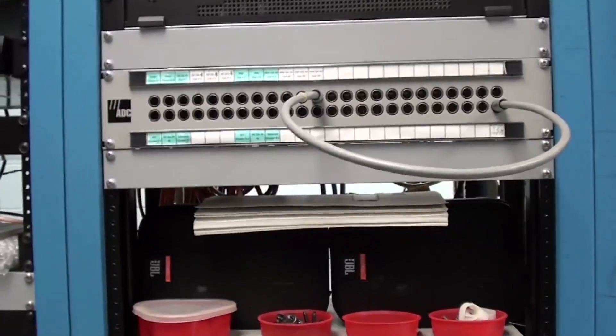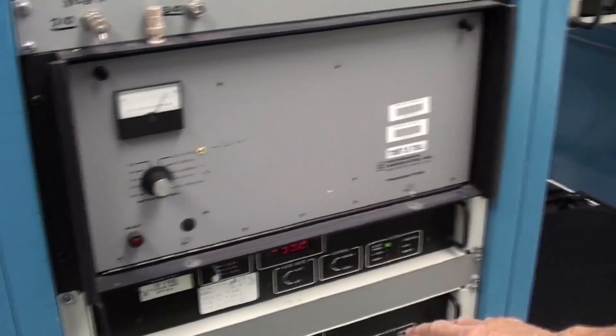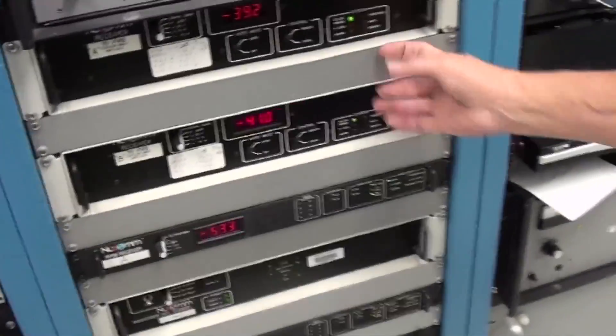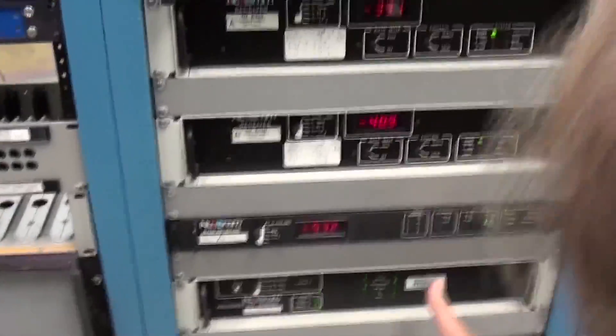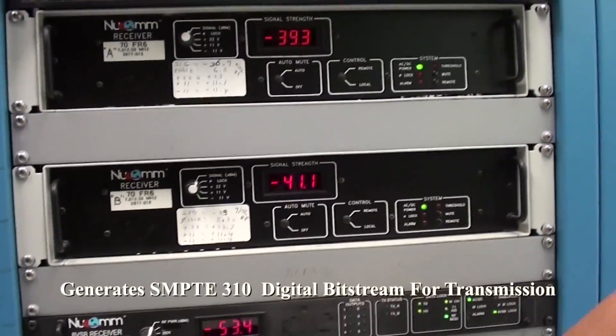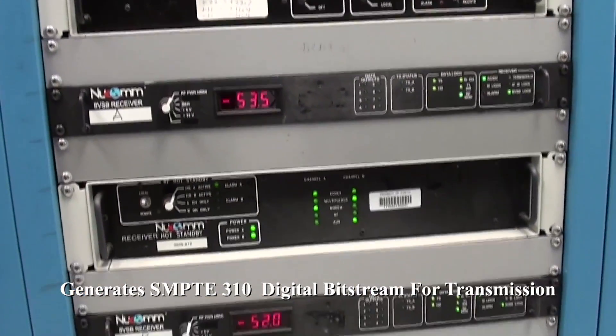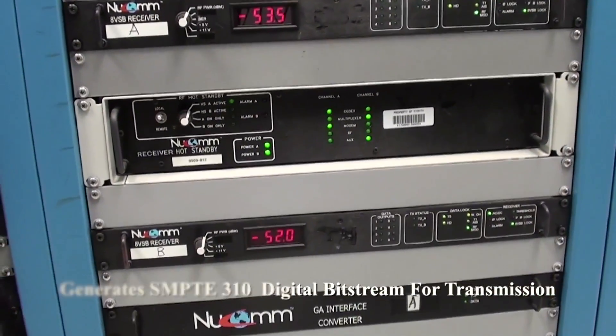The idea is you don't want to plug in there. Up here is still some STL stuff they use for sending audio back for you. Here's the high definition. These are two receivers with the high definition 8SV receivers. So these receivers feed into these guys to give us the SMPTE 310 for the transmitter. Hot standby switches and so forth.